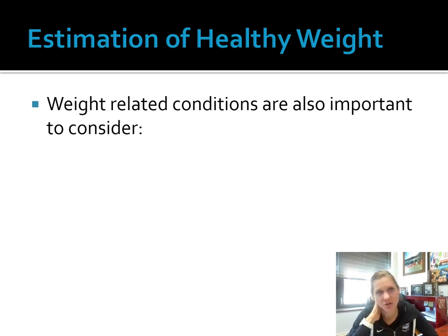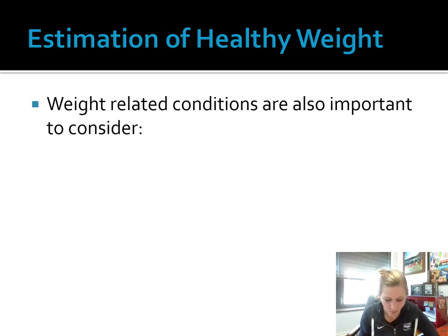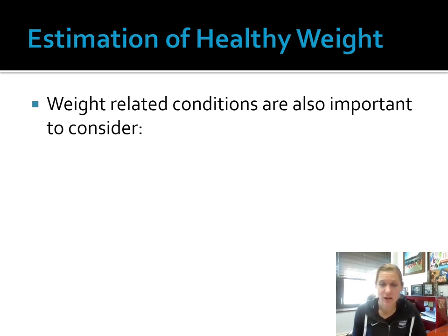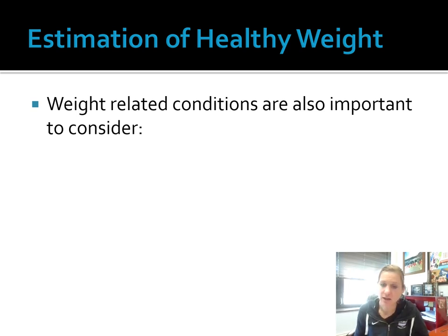When we think about estimation of healthy weight, weight-related conditions are also important to consider. When trying to figure out where an individual wants to be in terms of weight, we should ask: Do they have hypertension? What's their LDL cholesterol? Do they have a family history of obesity, cardiovascular disease, or cancer? What's their pattern of fat distribution? Abdominal adiposity — having a large amount of fat in the stomach region — puts us at greater risk for many chronic diseases than body fat stored in the arms or legs. Also consider fasting glucose levels.